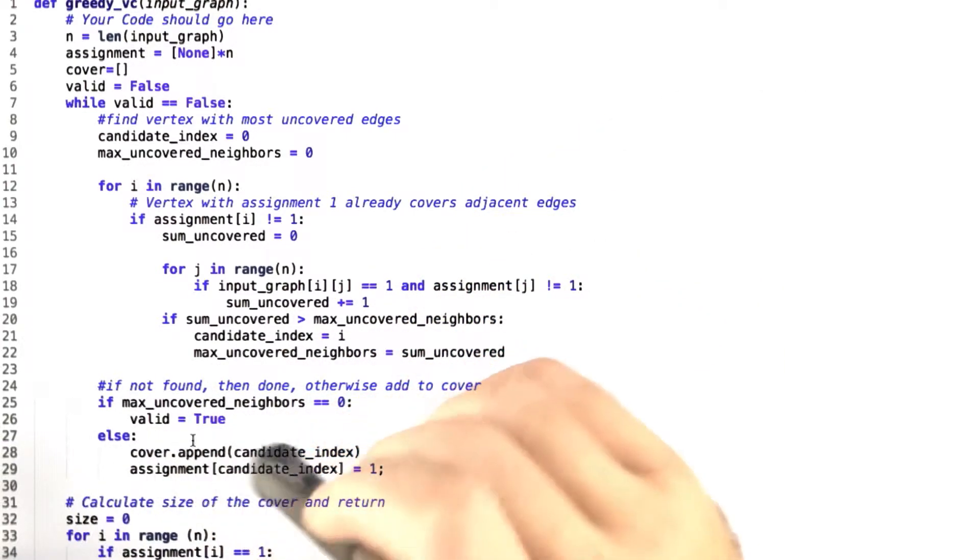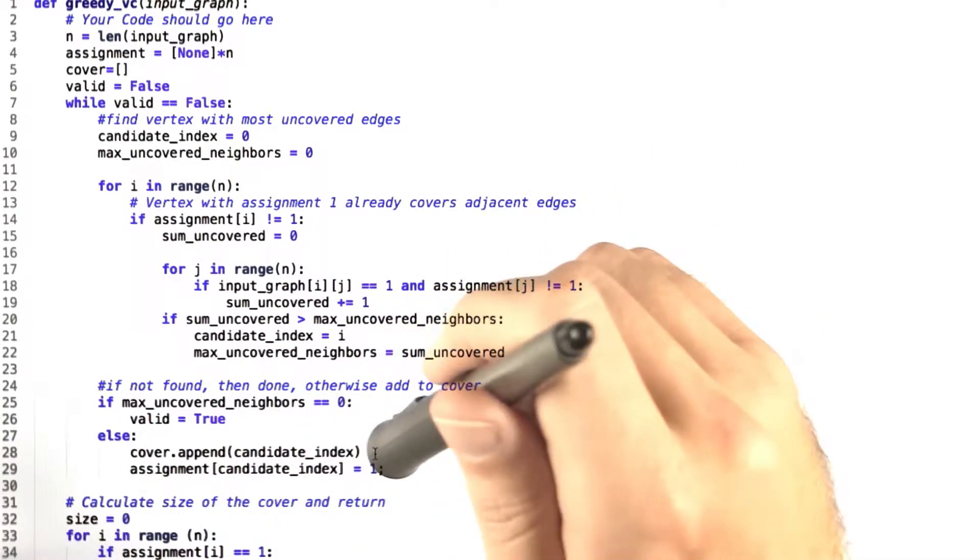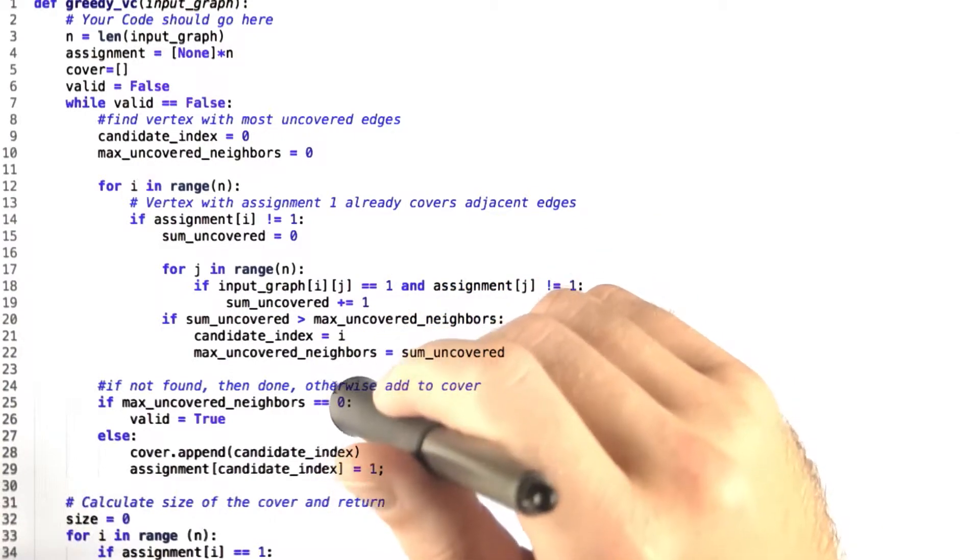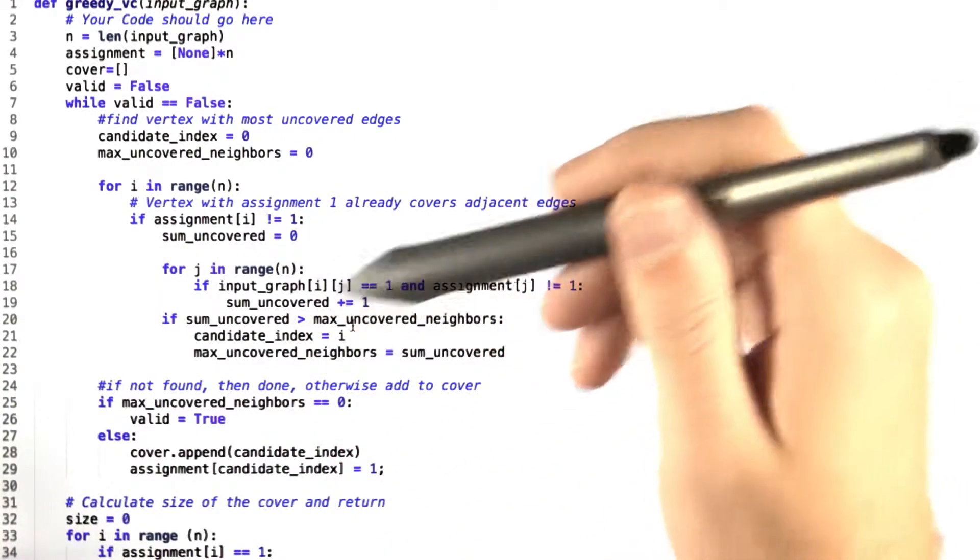Otherwise, we append this index to the current cover and we set the assignment of this candidate vertex to be 1. And then we continue on, finding the vertex with the next smallest number of uncovered adjacent edges.